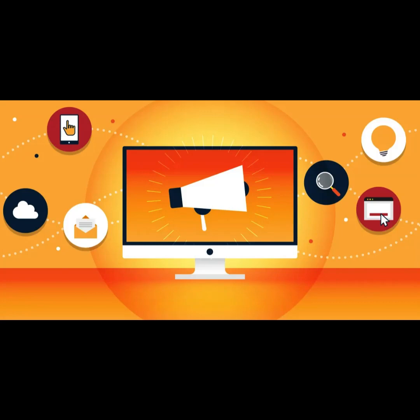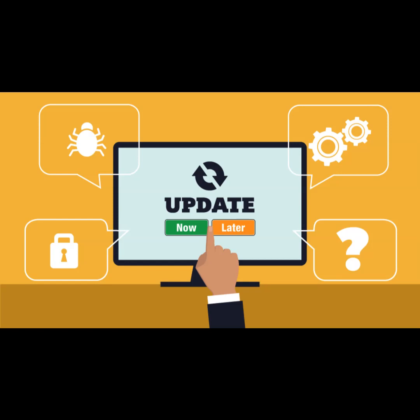Step five: market your product. Promote your software product through online advertising, content marketing, social media, and relevant software directories. Highlight its features and benefits. Step six: provide customer support. Offer customer support to assist buyers with installation, troubleshooting, and questions. Regularly update the software to fix bugs and improve features.